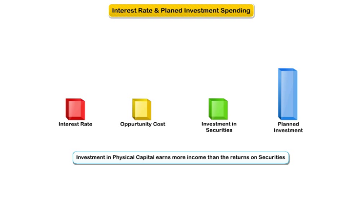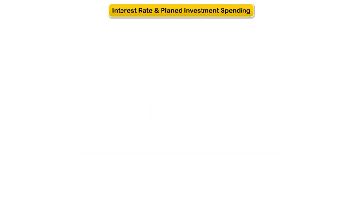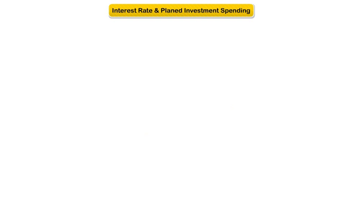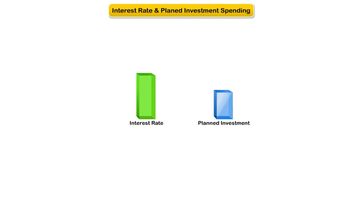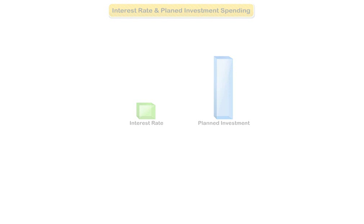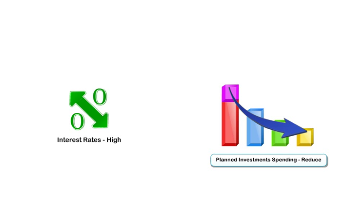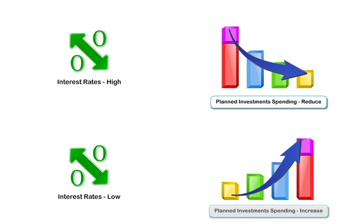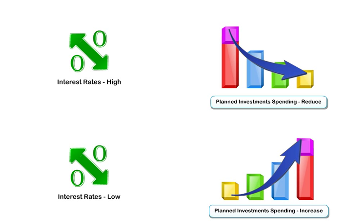To summarize: interest rates are inversely related to planned investment spending by firms. An increase in interest rates decreases planned investment, and a decrease in interest rates increases planned investment. If interest rates are high, firms' investment spending tends to reduce; if interest rates are low, investment spending tends to increase.